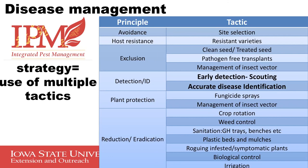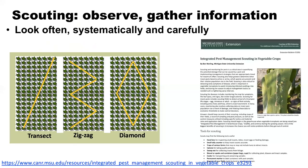Today we're going to be focusing on scouting — how you go about early finding those problems. Scouting is simply going into your fields or greenhouse and looking at your seedlings. Make sure that you do this in a systematic way. You can walk your high tunnel, greenhouse, or field on a transect, a zigzag, or a diamond, and you can alternate week to week between different configurations as you look at your plants specifically.